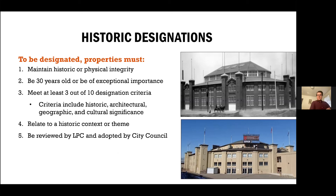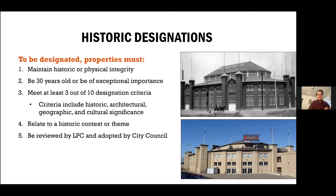How does a building become historically designated? How does it become a Denver landmark? It has to meet a series of requirements. The first is that it has to maintain historic and physical integrity. Integrity is always a tricky thing to explain in preservation — it doesn't mean structural integrity. We talk about it in terms of the ability of something to convey its significance. Here we have the Coliseum building, the stadium arena at the National Western Center, with a historic photo showing how it appeared after construction and a current photo. While there have been some changes, the building retains integrity because you can still recognize it as that historic building and understand what it was — an arena for the presentation of livestock during the stock show.